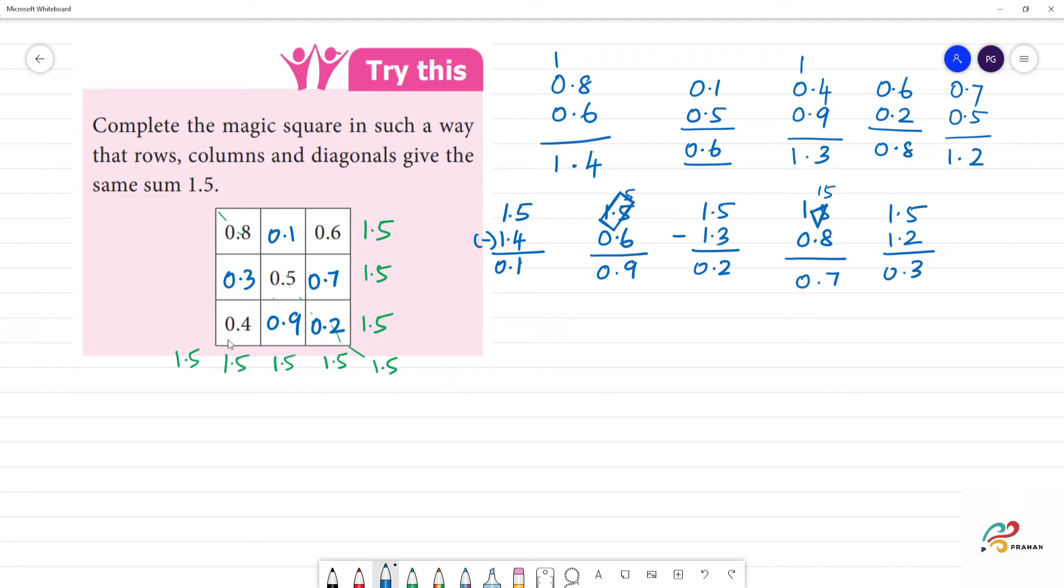So here we have 1.5, 0.1, 0.2, 0.3, 0.4, 0.5, 0.6, 0.7, 0.8, 0.9. So here we have 9 boxes, 9 numbers. One number will be filled up in which case is not be repeated. There is no repetition.